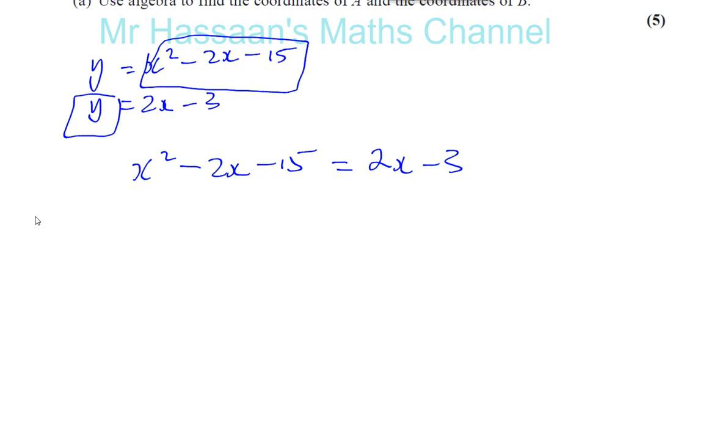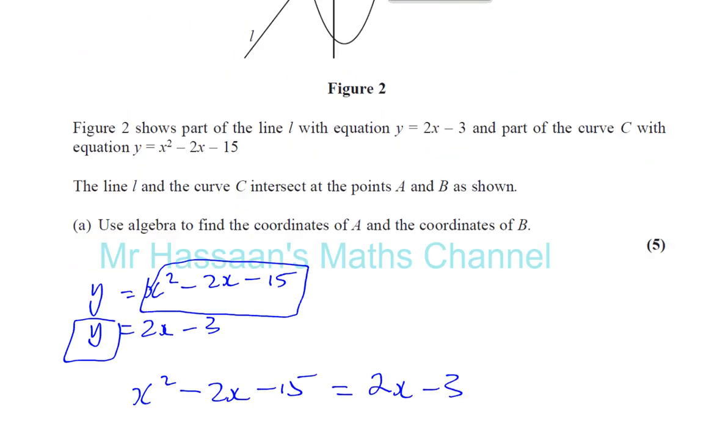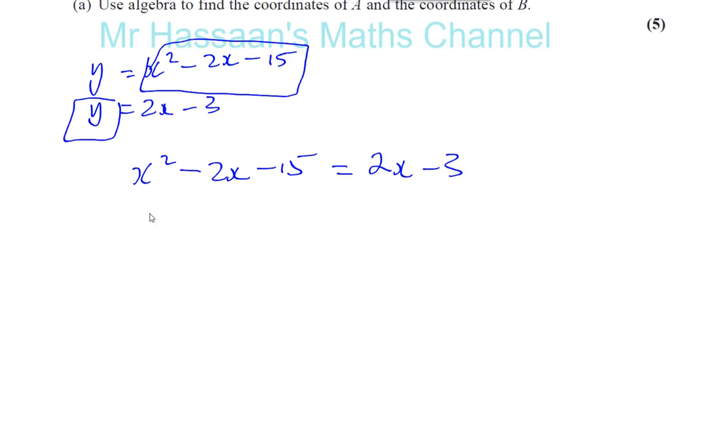Solving this equation will help us find the values of x and y which satisfy both of them. And there's going to be two values, two coordinates where they intersect, A and B.